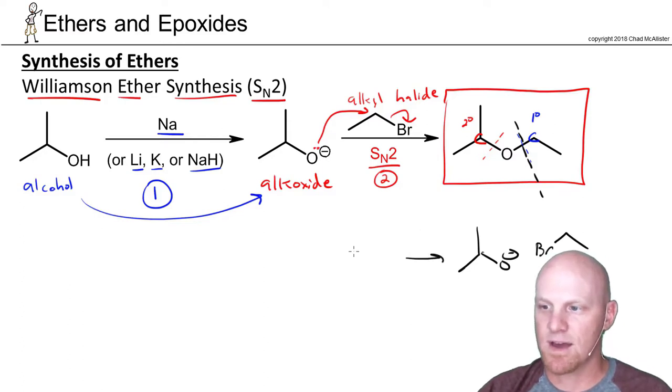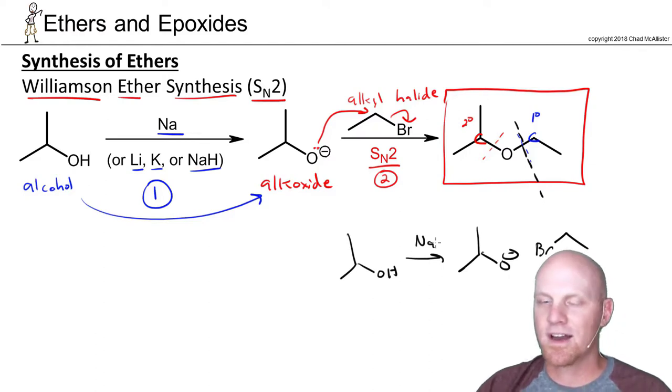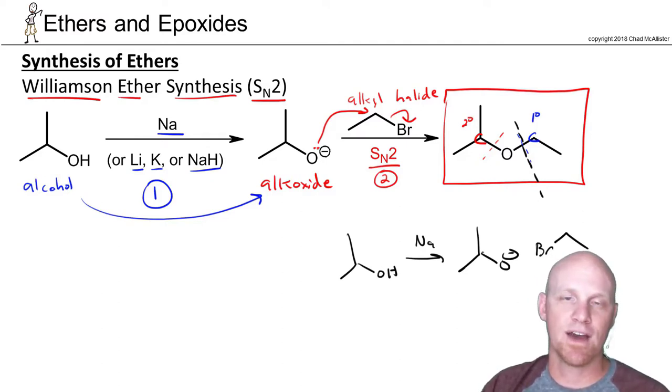And then obviously we just make this from the corresponding alcohol in the same fashion we just did. So that's kind of how you break this apart and look at this from a retrosynthesis perspective. Whichever side of the ether is least substituted that's the one you want to make the alkyl halide. The other side will be the alkoxide.